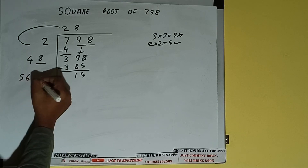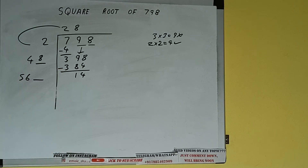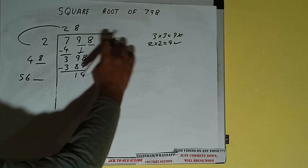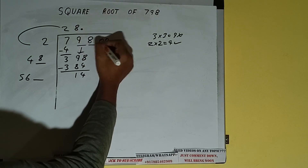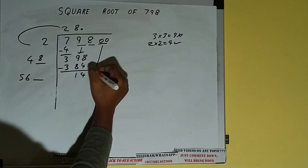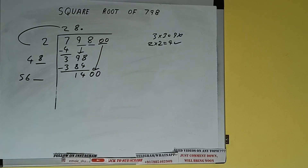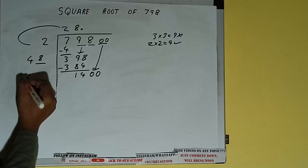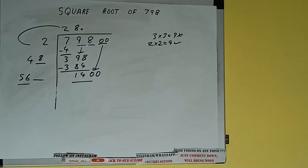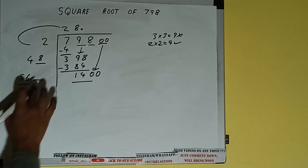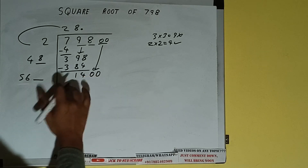48 plus 8 will be 56, and one digit extra. This number we need to make bigger, but we don't have more pairs, so we'll put a decimal. Once I put the decimal, we can bring a pair of zeros down, and it will be 1400.